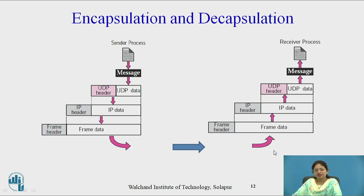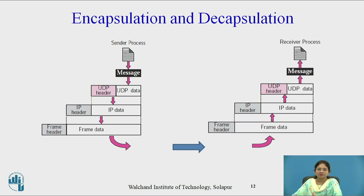On the receiving side, when the physical layer receives the bits, they are transmitted up to the data link layer, which converts the bits into a frame. The header is dropped and the remaining data is passed to the network layer, where the IP header is dropped and data is decapsulated and forwarded to the next layer. In this way, the message is transmitted to the receiver process. This is how encapsulation and decapsulation are carried out.